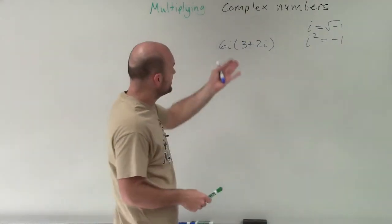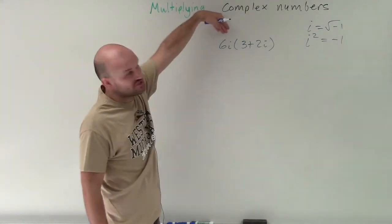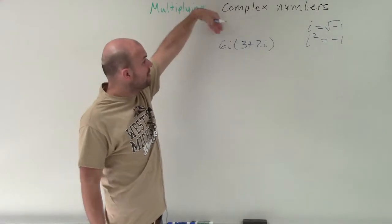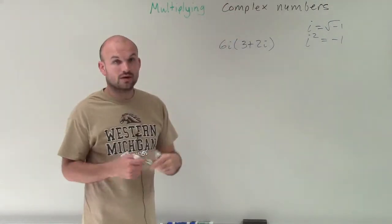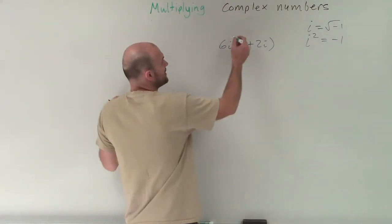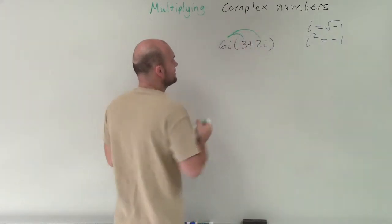All right, so here I have 6i, which is a complex number with no real part, multiplying by 3 plus 2i. To multiply this through, I need to apply the distributive property.